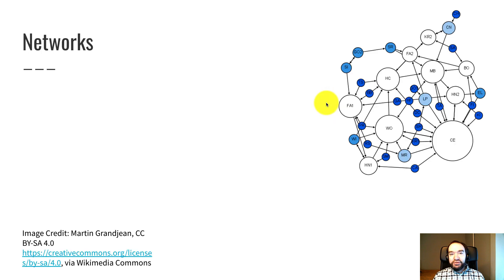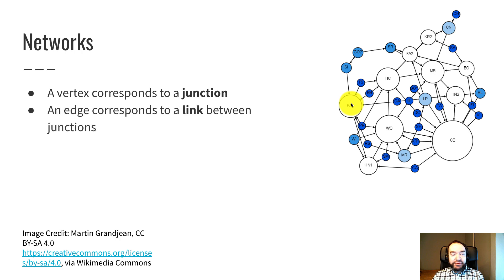So what we use edges for are to model basically some kind of network. So in a network where you have things connected to other things, a vertex corresponds to a junction, a place where multiple connections come together, and an edge corresponds to a link between two junctions.